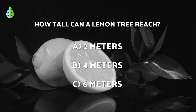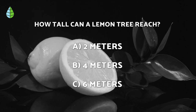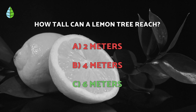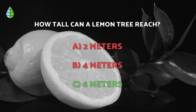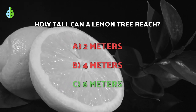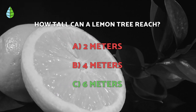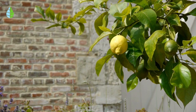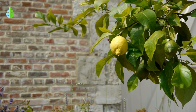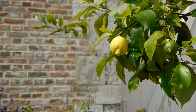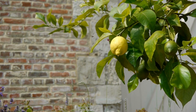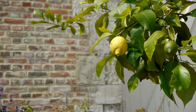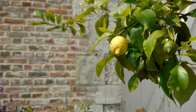Going back to the question we asked you earlier — the correct answer is C. Lemon trees can reach 6 meters in height in their natural state. Well, that's it for today. Thank you for watching. If you have any questions or suggestions, please leave a comment below. And don't forget to subscribe to our channel for more videos like this. Until next time.